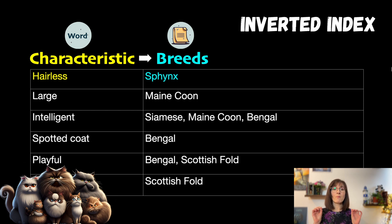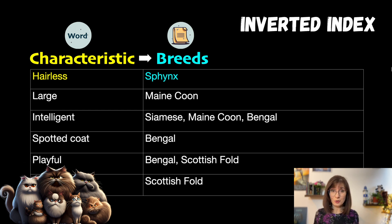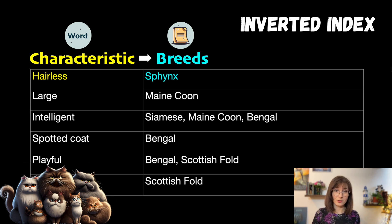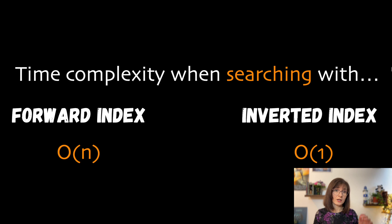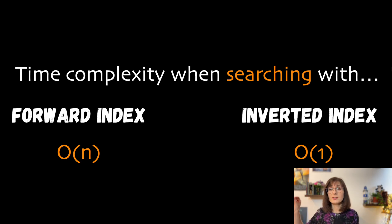This is significantly more efficient than finding the information using a forward index. And for those of you who love to judge performance from the point of view of time complexity: the search using a forward index will be O(N), since we have to go through all the documents to find what we need. But the inverted index is just O(1) because we use a HashMap to go directly from the characteristics to the set of documents that contain it.